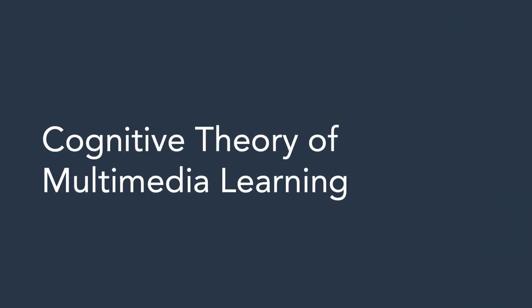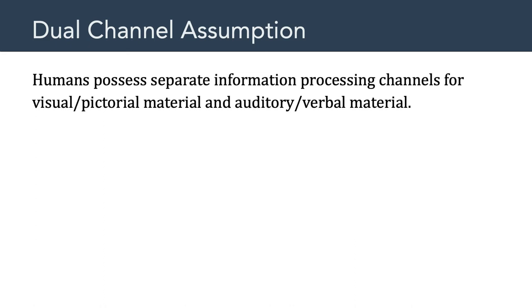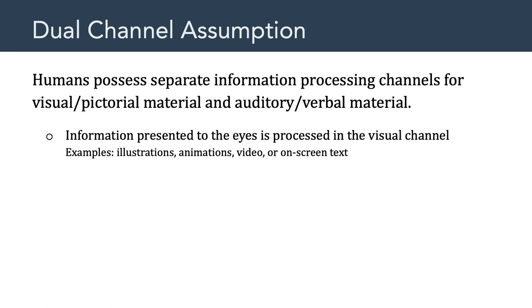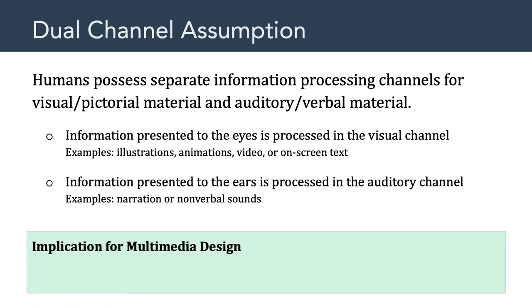All right. Now, let's move on to Mayer's cognitive theory of multimedia learning. Now, the cognitive theory of multimedia learning has been around for quite a few years now, and it's based on three assumptions about the way the human mind processes information. The first assumption is the dual-channel assumption. And this is the assumption that humans possess separate information processing channels for visual-spatial material and auditory-verbal material.